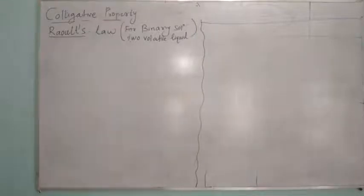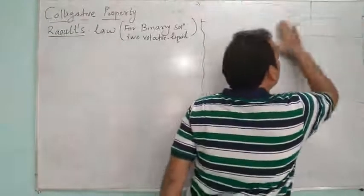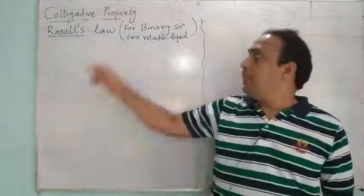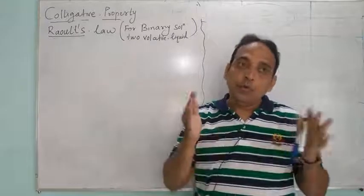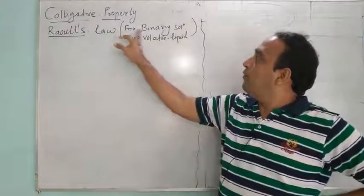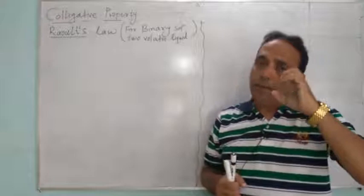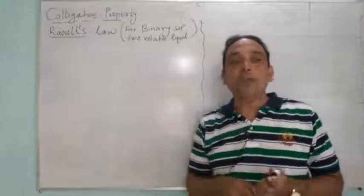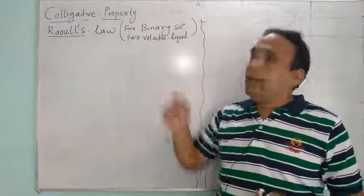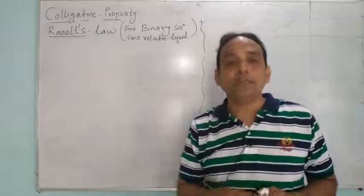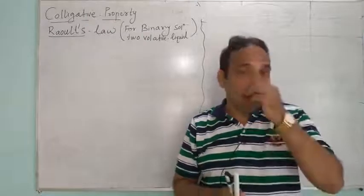Related to the first colligative property, one law is given: Raoult's law. Raoult's law is given for two purposes. One is Raoult's law for a binary solution containing two volatile liquids, and in the next video lecture we will discuss Raoult's law for solute. A binary solution contains two components — one solute and one solvent. Volatile liquids are those which easily evaporate, converting from liquid to vapor state, and they have a low boiling point.